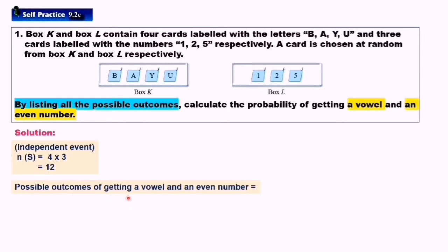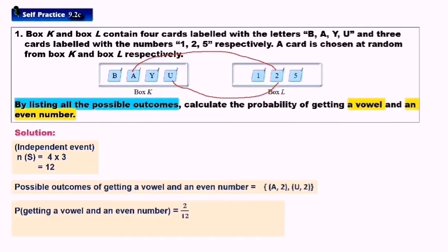The possible outcomes of getting a vowel and an even number: vowels are A, E, I, O, U, so based on Box K, we have A and U. Starting with letter A paired with an even number and letter U paired with an even number, we have two possible outcomes: A2 and U2. The probability of getting a vowel and an even number equals 2 over 12, which simplifies to 1 over 6.